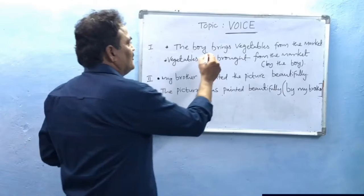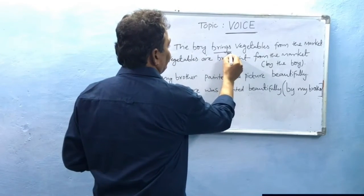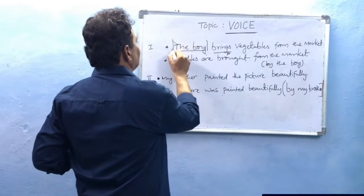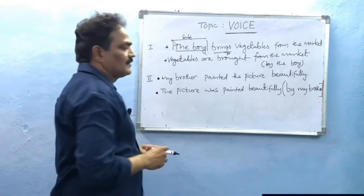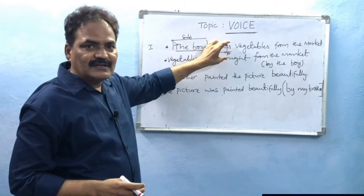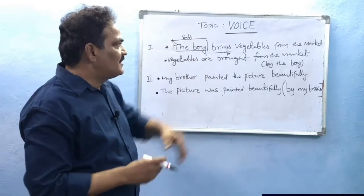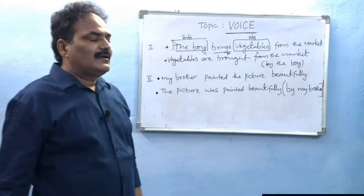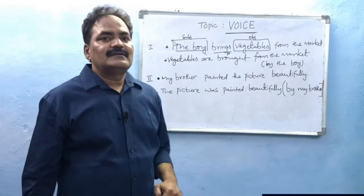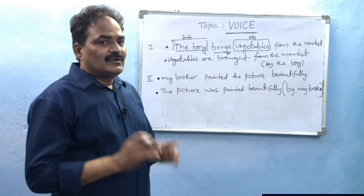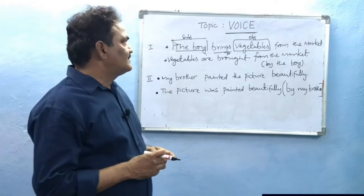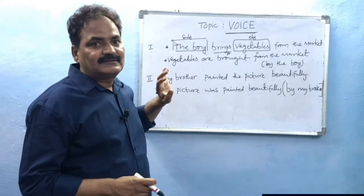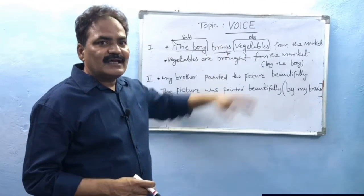Consider the sentence: 'The boy brings vegetables from the market.' 'Brings' is the main verb in present form. This action is done by the boy — this is the subject. So if the subject is doing the work — bringing — what is he bringing? Vegetables — this is the object. The remaining part, 'from the market,' tells us where. So we understand three main parts: the action, the doer of the action (subject), and the result of the action (object).